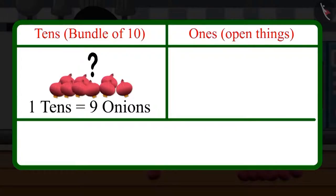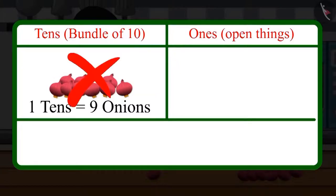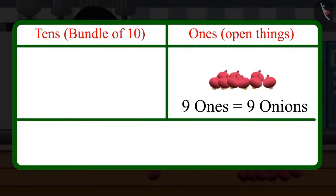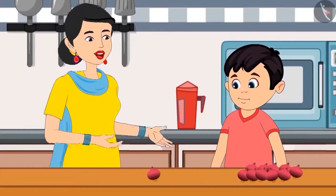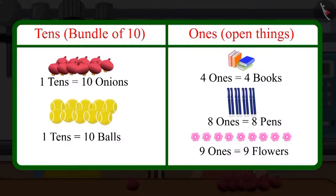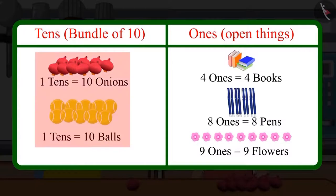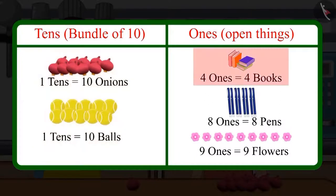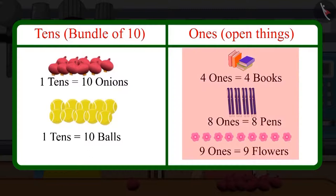Okay, Choto, tell me something. Can 9 onions together make 1 ten? No, Mommy. For this, we will need 1 more onion. This will be 9 ones. Absolutely right, Choto. This means that 10 onions or 10 balls — all those things present in a group of 10 — make tens. But 4, 8 and 9 things, which are less than 10, they are ones. And we count them individually.